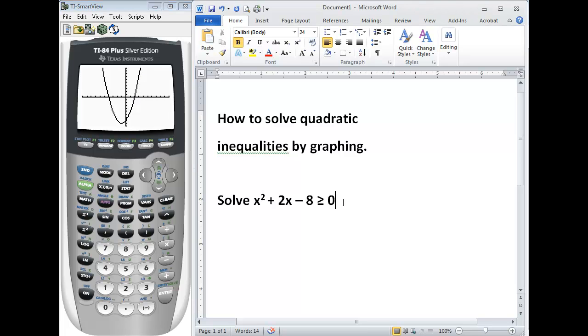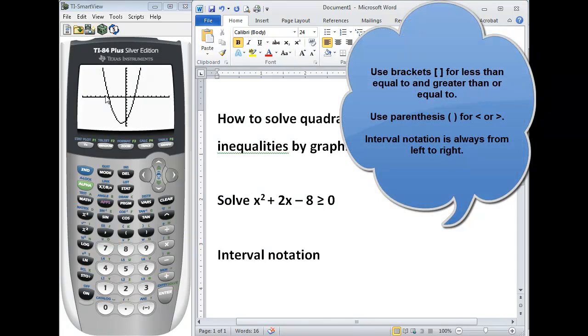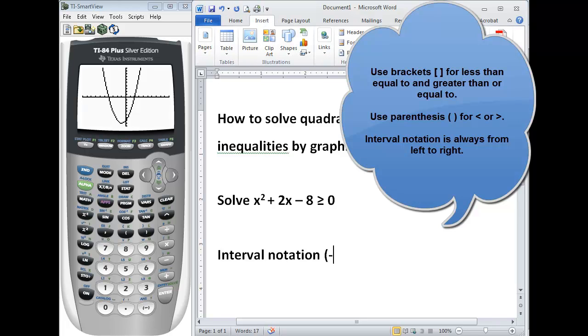When we're writing our answer for this problem in interval notation, we always go from the left side to the right. So the left side, representing x here, is our negative infinity all the way up until this x-intercept, that value is -4.